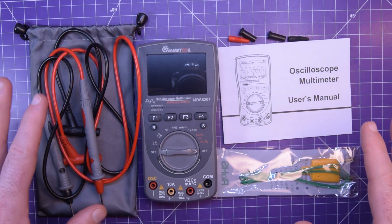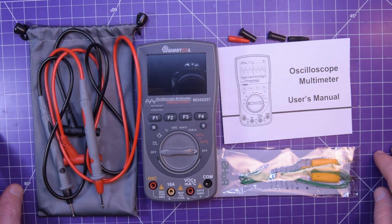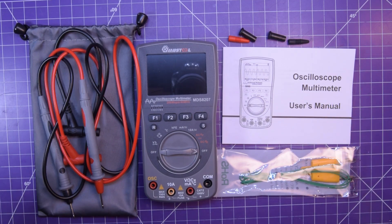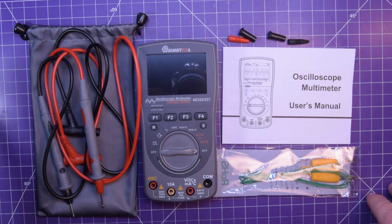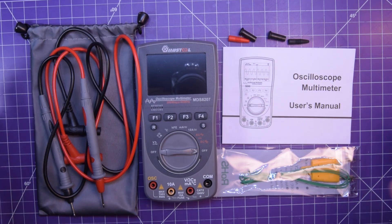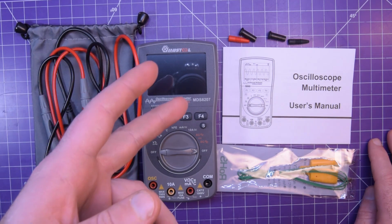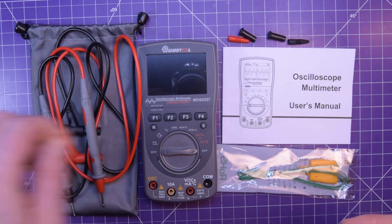Banggood sent me this for free with no expectation of a positive review, just for me to look at and make a video. They're not telling me what to say and in fact I don't think I would let them anyways. So anyways this thing is a $93 multimeter with an oscilloscope function.